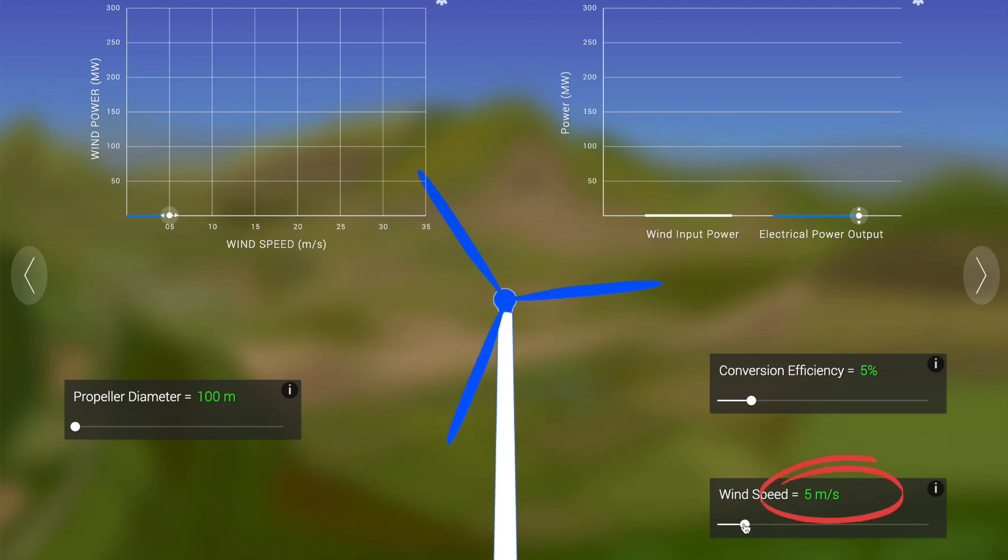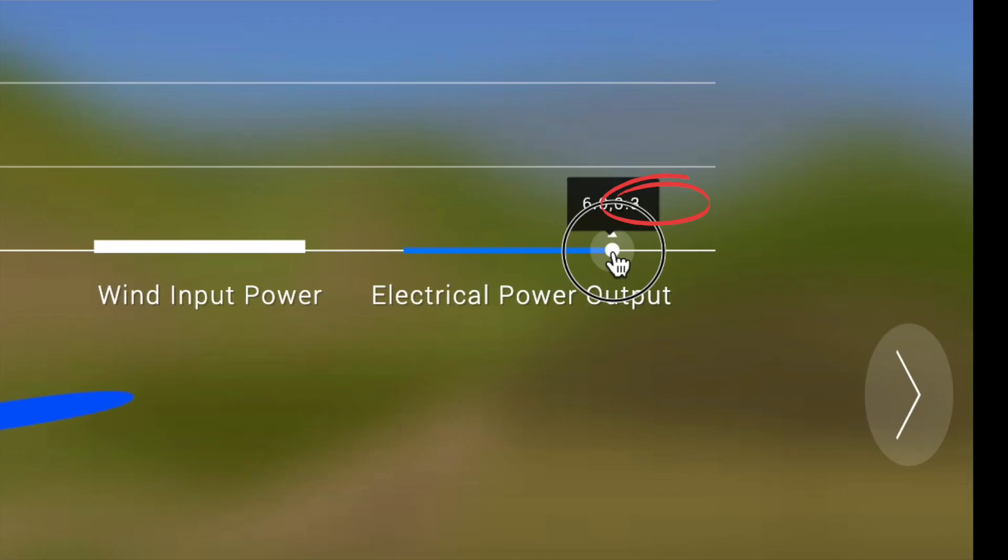So in my sample here, I've set my wind speed at 5 meters per second, and I can see that my electrical power output has changed to 0.3.